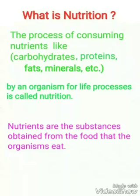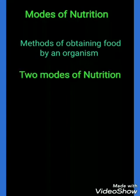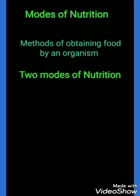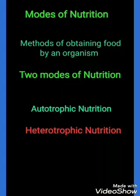What are nutrients? Nutrients are the substances obtained from the food that an organism eats. Now, what are the modes of nutrition? Mode means the method of obtaining food by an organism. There are mainly two modes of nutrition: autotrophic nutrition and heterotrophic nutrition.